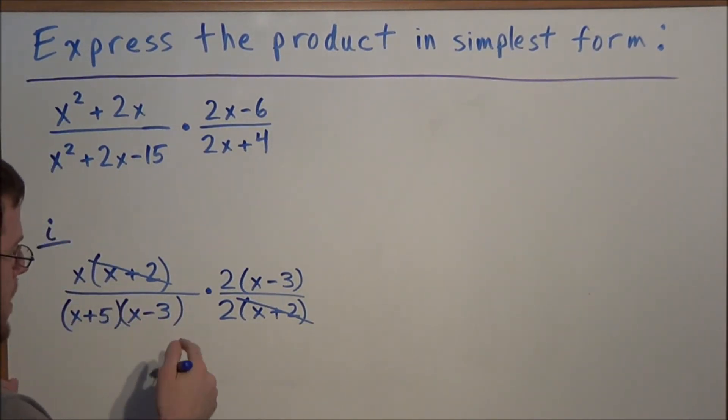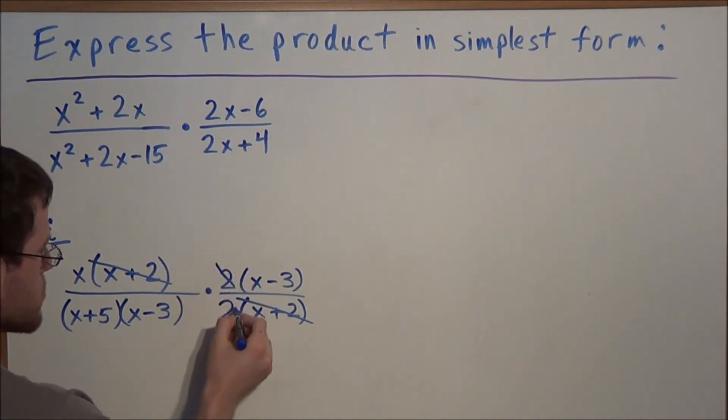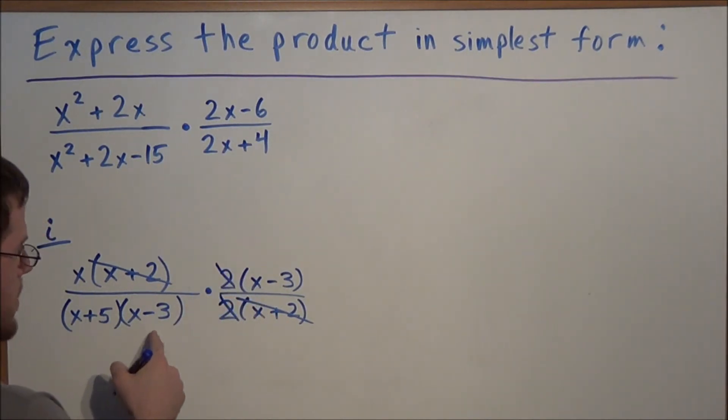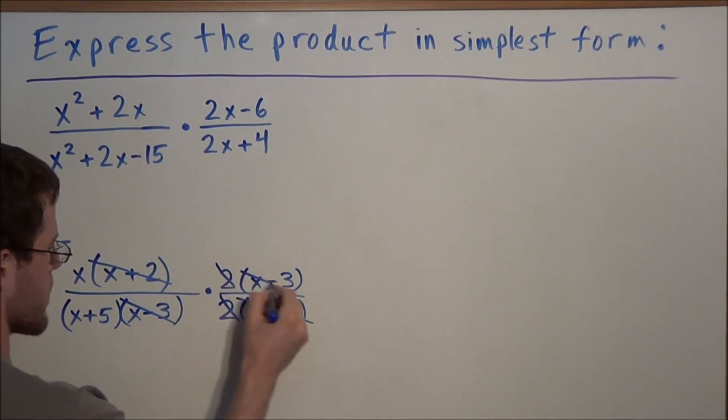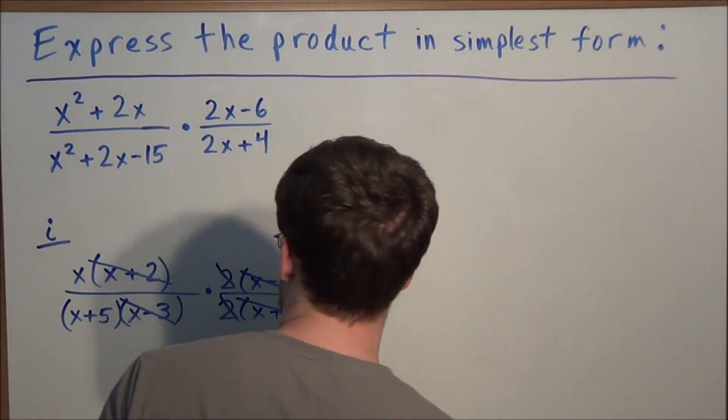And now we look for other common factors. We notice 2 divided by 2 will cancel out. And we have x minus 3 canceling out with x minus 3.